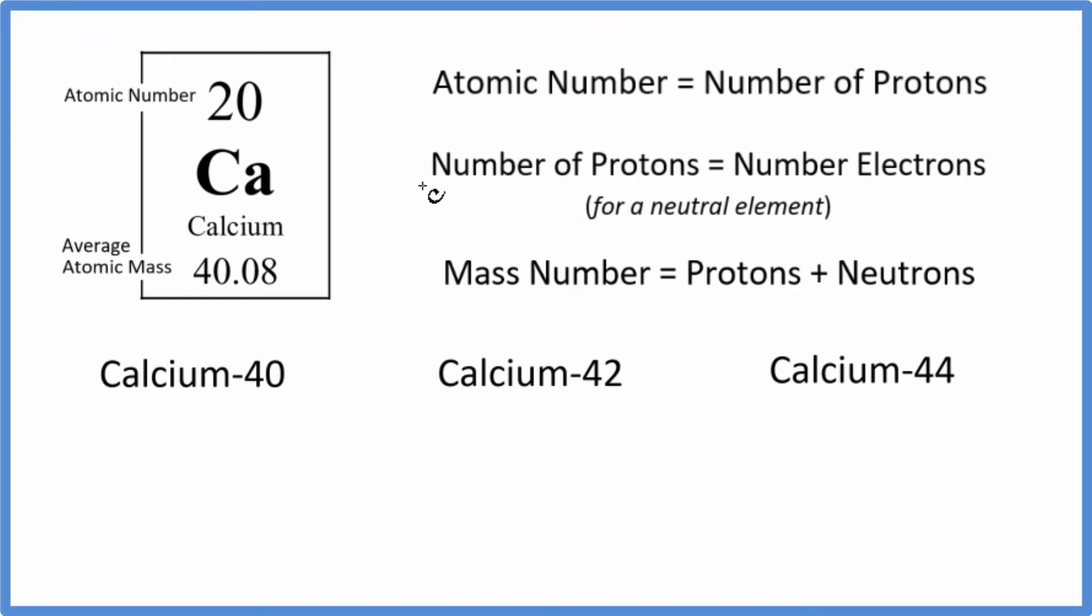In this video, we'll take a look at the isotope notation for calcium, Ca. It's sometimes called nuclear notation or isotopic notation. So there's two ways we can do this. We'll start out with what's called hyphen notation.